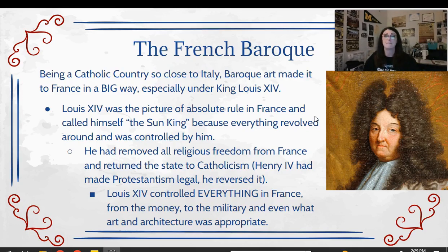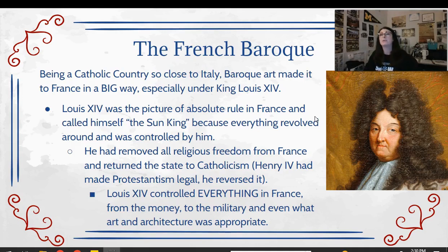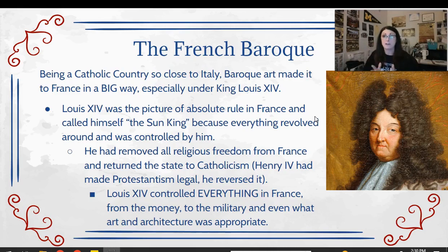He is the absolute picture of what a total monarch looks like. Louis XIV actually became king when he was very young and his mother served as a regent for him — kind of like Marie de' Medici was to Louis XIII. And Louis XIV, when he became of age, really decided to take everything in France under his own control — the money, the military, the religion, everything. He was going to be at the center of it all, hence why he is known as the Sun King.